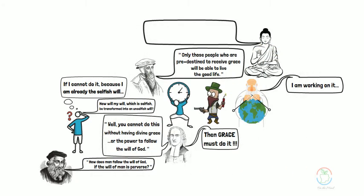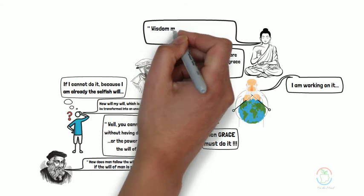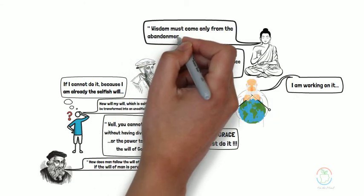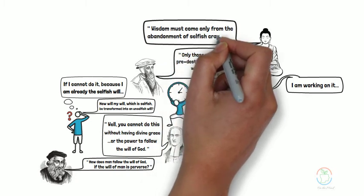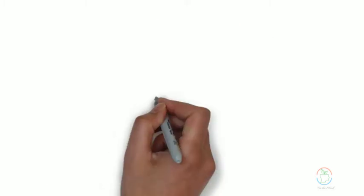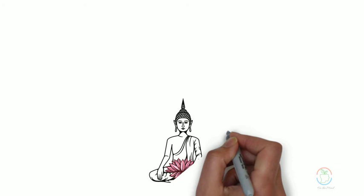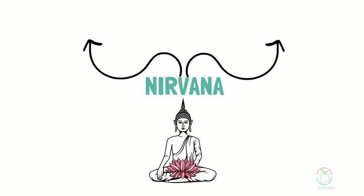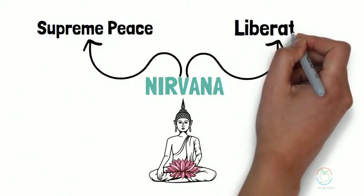The Buddha said that wisdom must come only from the abandonment of selfish craving or desire. One who abandons that desire attains nirvana, which is supreme peace, liberation.